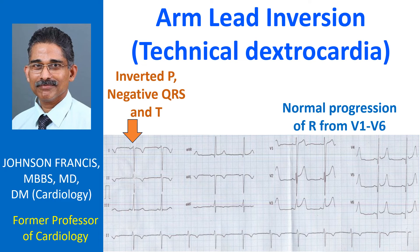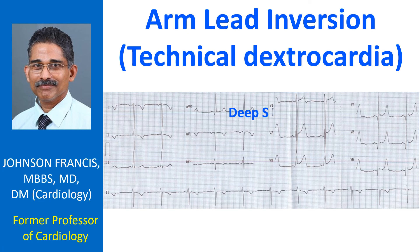This ECG also shows narrow Q waves and prominent T waves in lateral leads with mild concave upwards ST segment elevation. The S waves in lead V1 are deep and the R waves in V6 are tall, possibly evidence of left ventricular hypertrophy by voltage criteria.